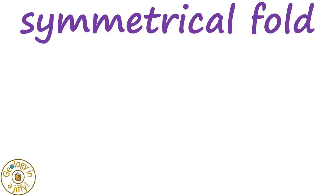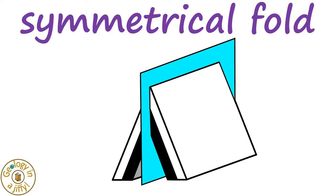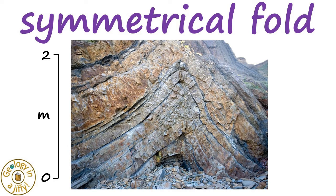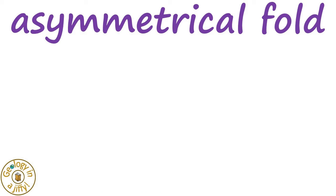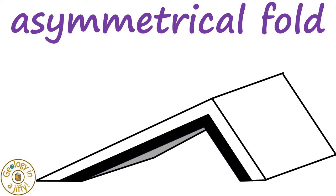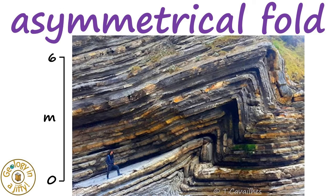A symmetrical fold has a vertical axial plane, with the limbs being equidistant from the axial plane, as demonstrated by these folded strata in southwest England. An asymmetrical fold is one in which the axial plane is inclined, making the limbs dip at different angles, as seen here in folded limestones and mudstones in southwest France.